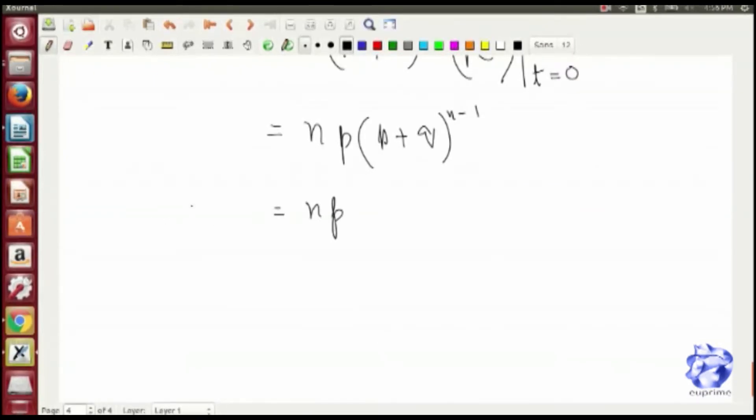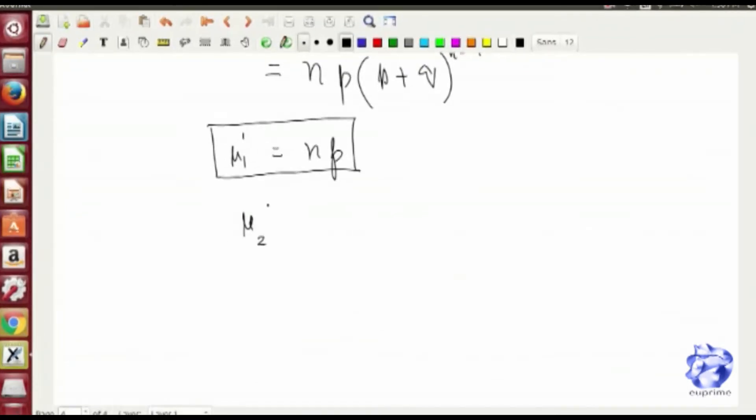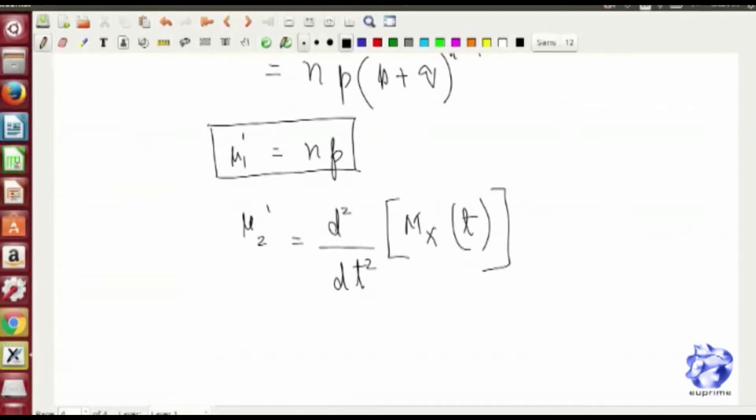So that's the mean term. Then you evaluate the same function by differentiating it twice.